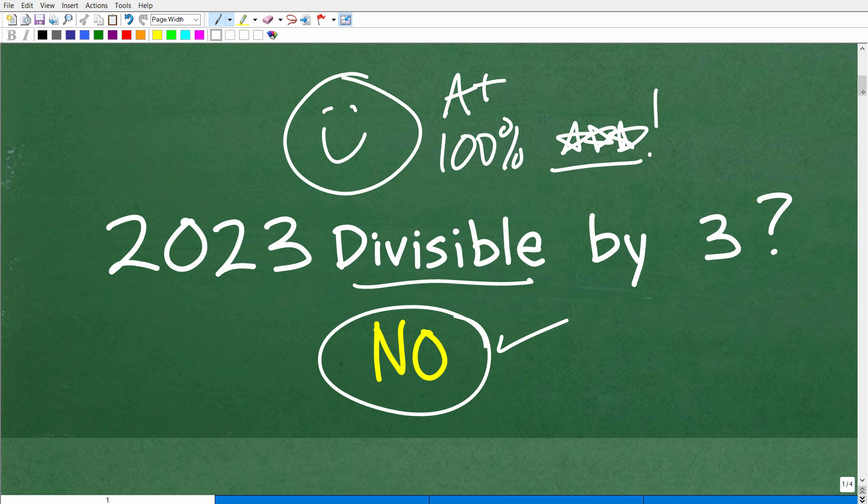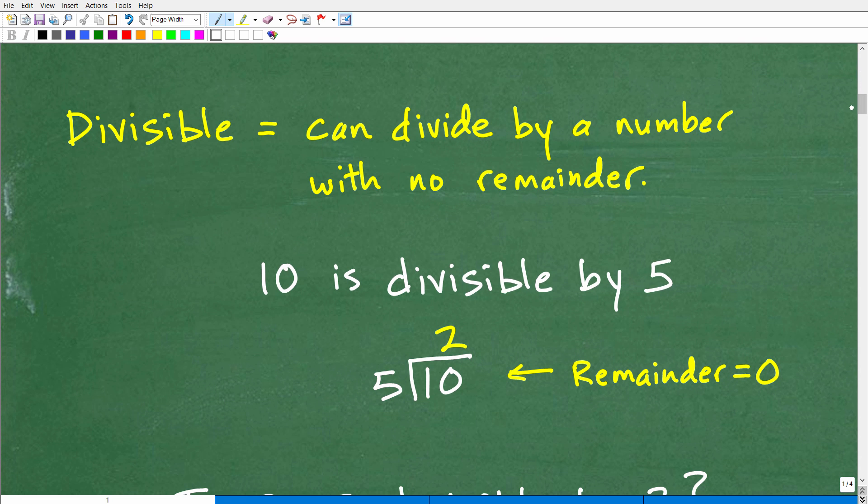Let's get into this. We're talking about this word divisible. So it's probably a good idea to define that word. Divisible probably has something to do with division, right? If you're thinking, are we talking about division? Yes, you would be correct. Divisible is basically a property or characteristic that a number can be divided by another number with no remainder.